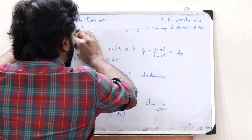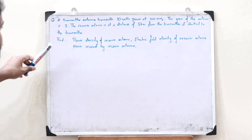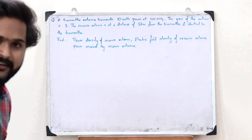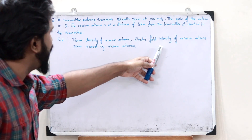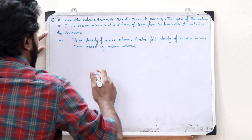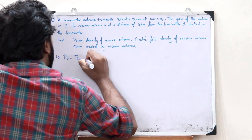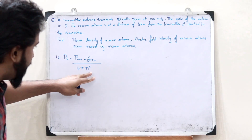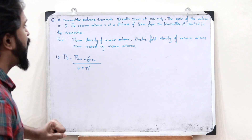Now let us look at a different type of question. A transmitter antenna transmits 10 watts of power at 100 megahertz; the gain of the antenna is 3. The receiver antenna is at a distance of 5 kilometers from the transmitter and is identical to the transmitter. We need to find: (1) the power density at the receiver, (2) the electric field intensity at the receiver, and (3) the power received by the receiver antenna.